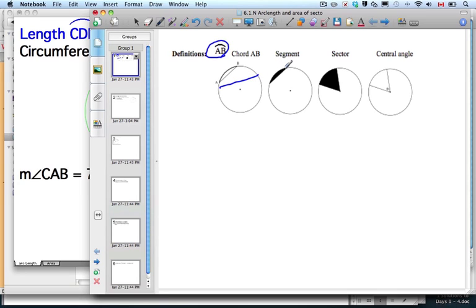Okay, we have a segment, which is you have a chord in the shaded region here, that's called a segment of a circle. Makes sense. And then like the pie piece or the pizza piece with the curved edge here is called a sector. And that angle down here is referred to as the central angle.